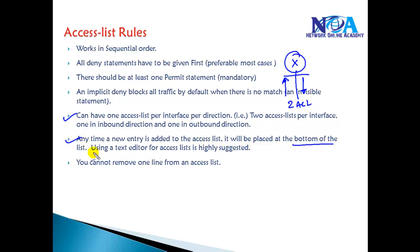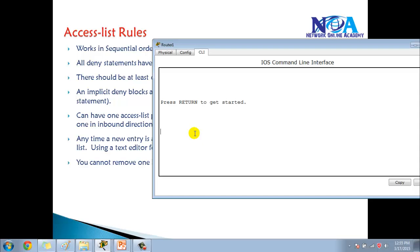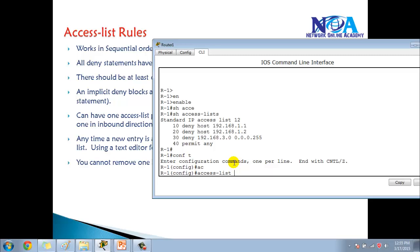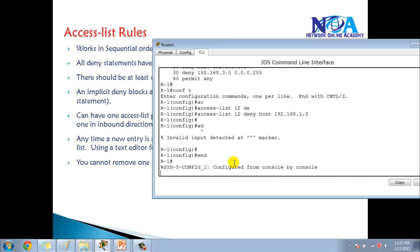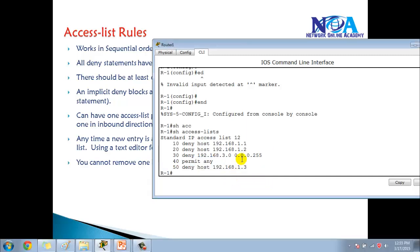Whenever you add any new entry, by default it is placed at the bottom of the list. Let's verify this on the command line. Looking at an existing access list — if I add a line such as 'access-list permit/deny host 192.168.1.3', it is added at the bottom by default. This means it may not work as intended because if 'permit any' is already present, it matches first and the new deny entry for 1.3 is never reached.